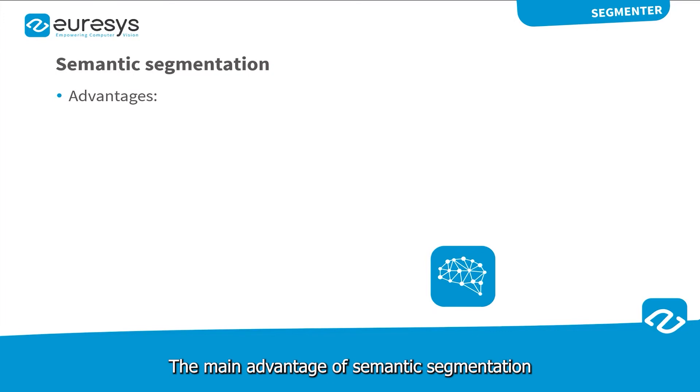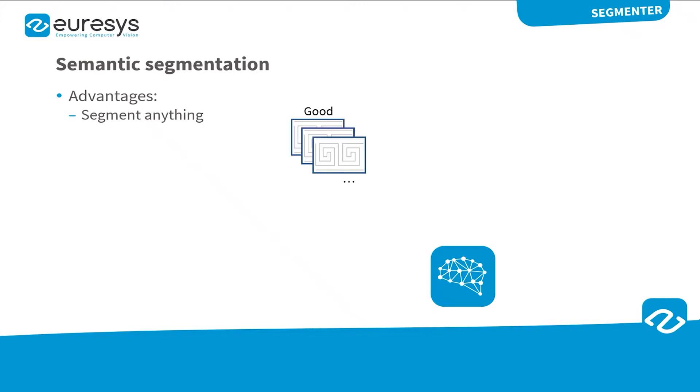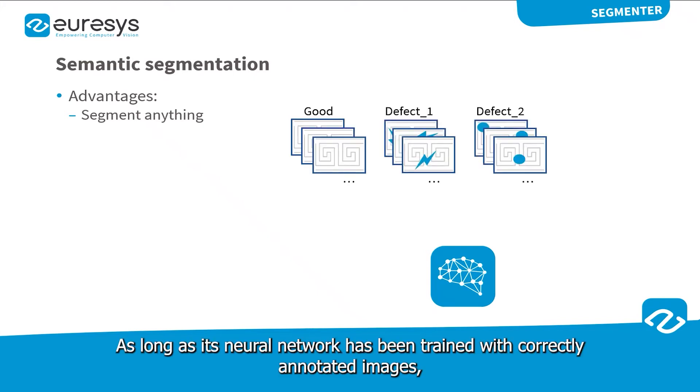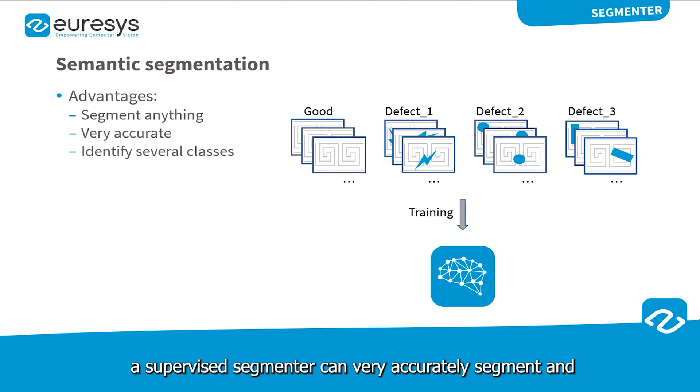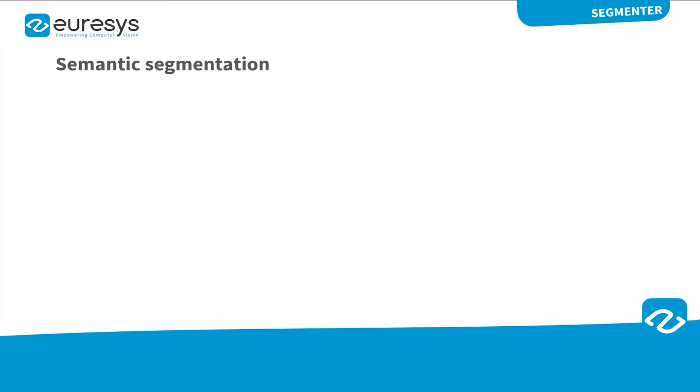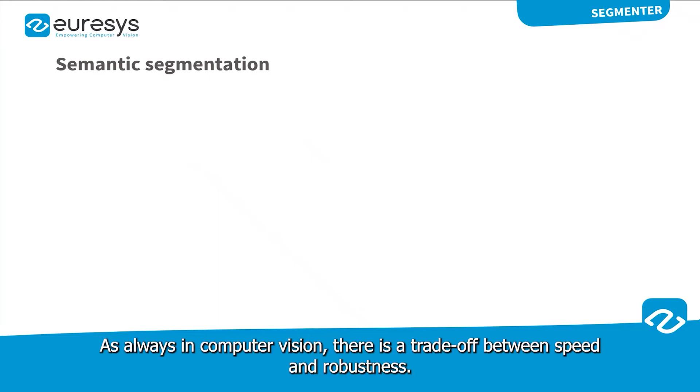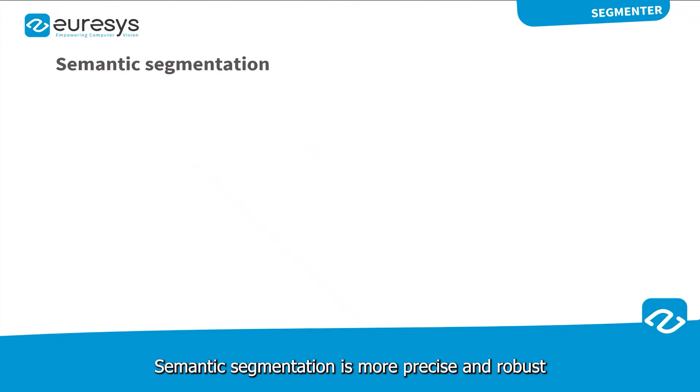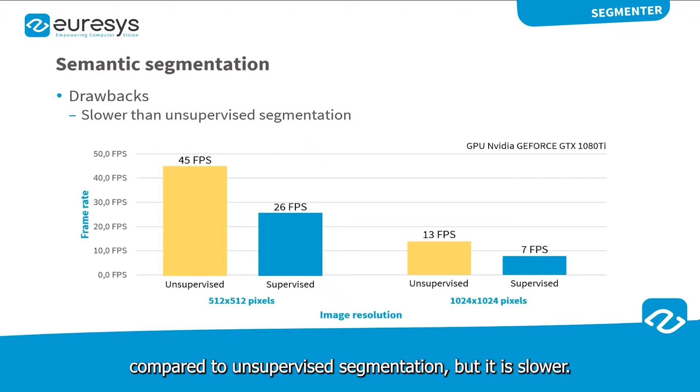The main advantage of semantic segmentation is that it can basically segment anything. As long as its neural network has been trained with correctly annotated images, a supervised segmenter can very accurately segment and differentiate between several classes of objects or defects. As always in computer vision, there is a trade-off between speed and robustness. Semantic segmentation is more precise and robust compared to unsupervised segmentation, but it is slower. Typically, two times slower than unsupervised segmentation for the same image resolution.